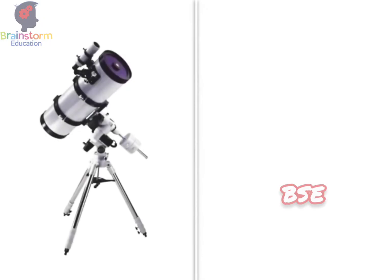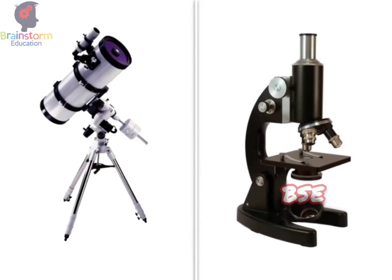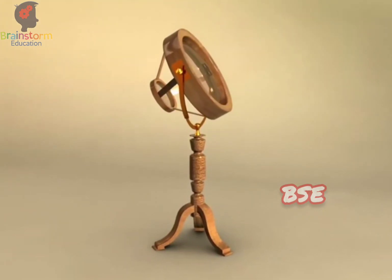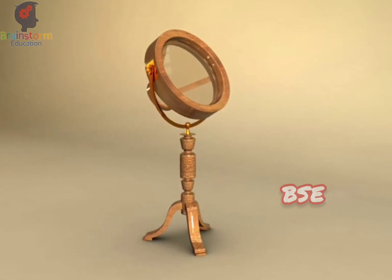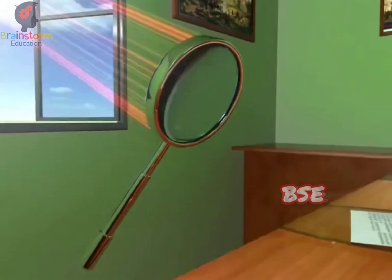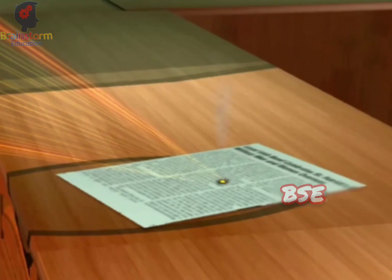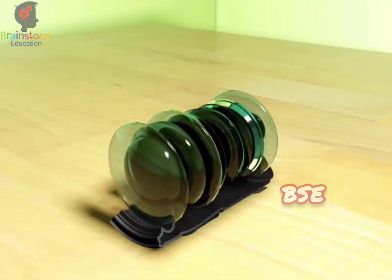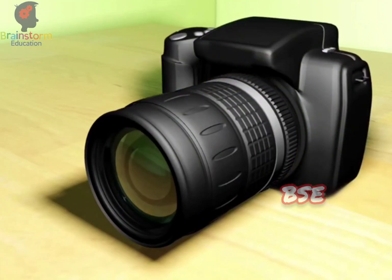Optical instruments like telescopes and microscopes have revolutionized the fields of astronomy, biology, medicine, etc. It all started with the humble burning glass that was used to produce fire in ancient times. A burning glass is nothing but a magnifying lens. A magnifying lens serves as a tool to start fire as well as to magnify tiny objects. Optical instruments mostly consist of a complex arrangement of lenses. Let's study spherical lenses in detail.